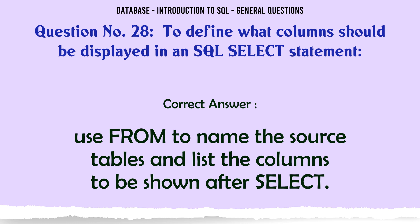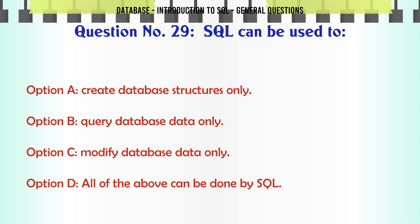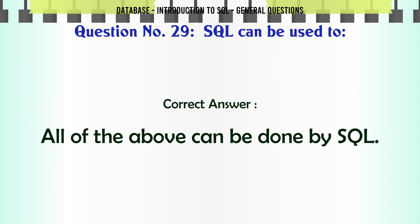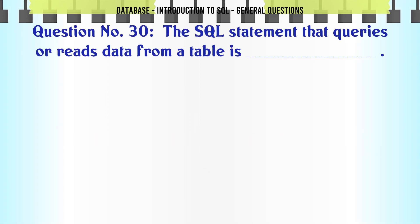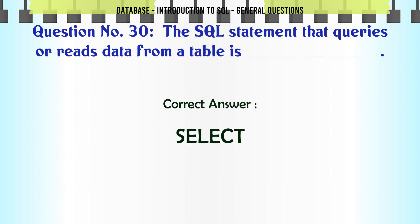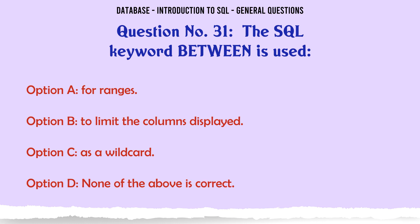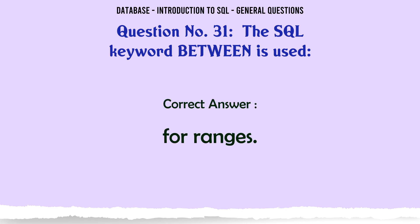SQL can be used to: A. Create database structures only. B. Query database data only. C. Modify database data only. D. All of the above can be done by SQL. The correct answer is all of the above can be done by SQL. The SQL statement that queries or reads data from a table is: A. Select. B. Read. C. Query. D. None of the above is correct. The correct answer is: Select. The SQL keyword BETWEEN is used: A. For ranges. B. To limit the columns displayed. C. As a wildcard. D. None of the above is correct. The correct answer is: for ranges.